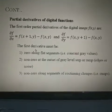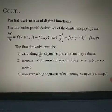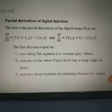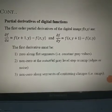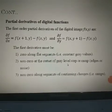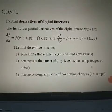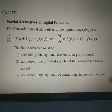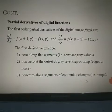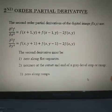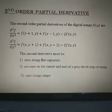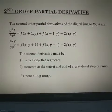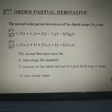The first derivative must be zero along flat segments with constant gray values. It should be nonzero at the onset of a gray-level step or ramp edges, or at noise. It should also be nonzero along segments of continuing changes, that is, along ramps.